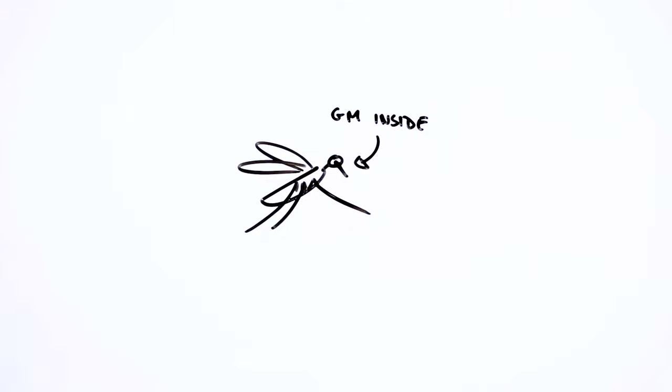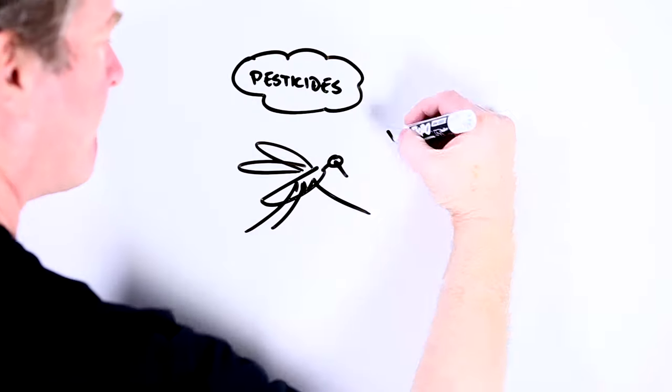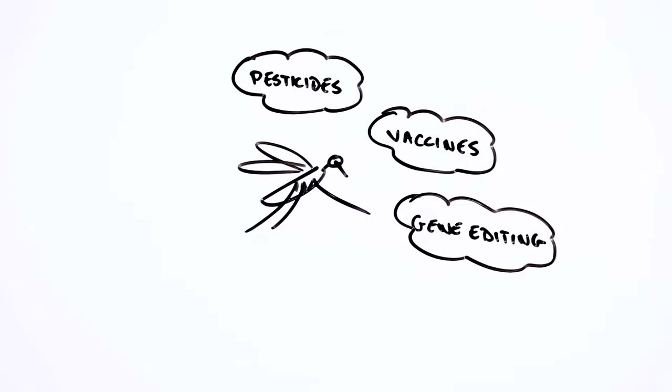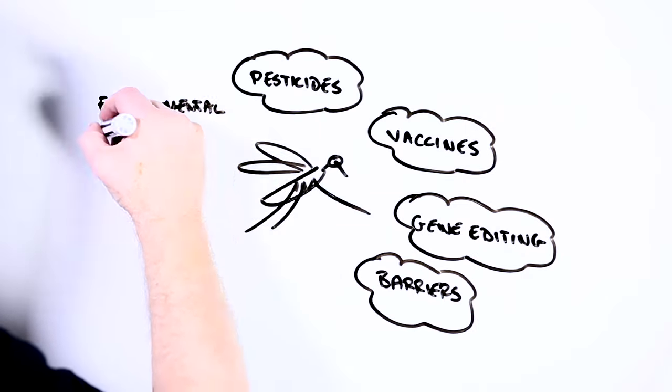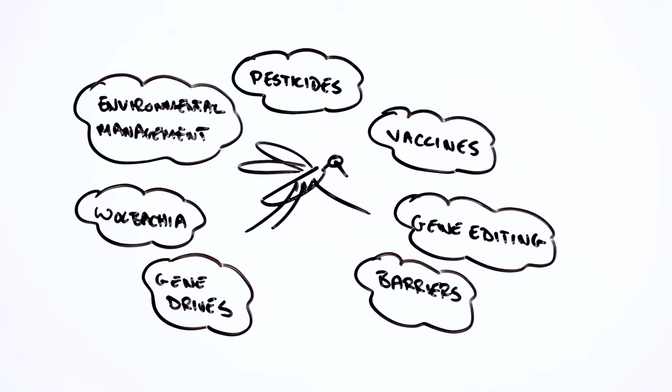Instead, using a solution-focused risk assessment approach, we can begin to talk about and agree on what we actually want to achieve. And this might include things like what the pros and cons are of current approaches like using pesticides, for instance, and where new technologies might or might not be better than the status quo.